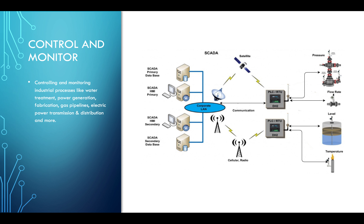The regular design of a SCADA system includes a corporate LAN — local area network. From the local area network, there are different communication channels: satellite, cellular radio, and some organizations still use dial-up. They can also use the internet, SONET networks, T1 networks, ring networks, and serial communication. Each organization has a different implementation.